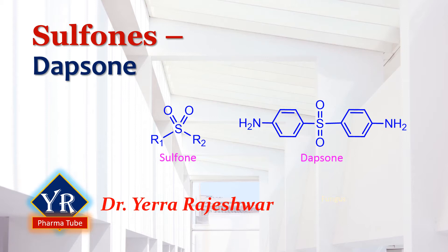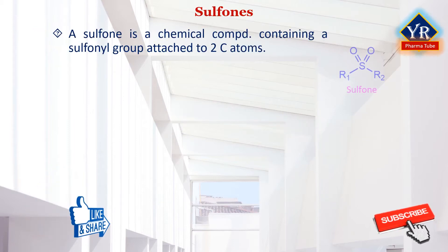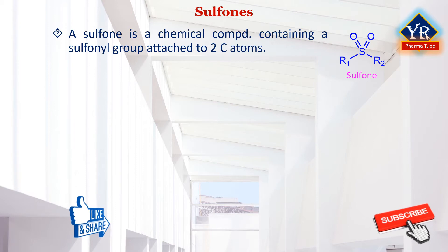For the other related topics of sulfonamides and medicinal chemistry, see the description below this video. A sulfone is a chemical compound containing a sulfonyl functional group attached to two carbon atoms. The central hexavalent sulfur atom is double bonded to each of two oxygen atoms and has a single bond to each of the two carbon atoms, usually in two separate hydrocarbon substituents.